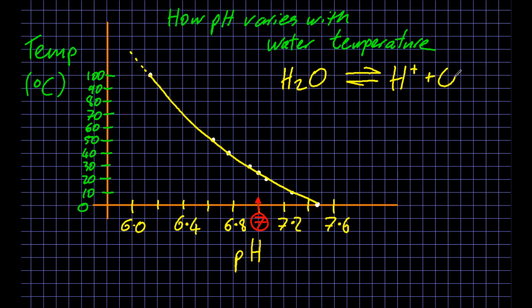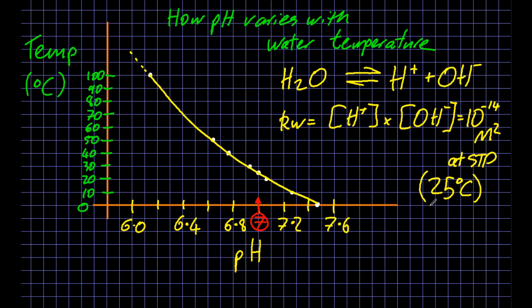So let's see if we can explain that. This is the dissociation equilibrium for water, breaking up into the hydrogen ion and hydroxide ion. Here's the equation for Kw, which is 10 to the minus 14 molar squared. You can ignore the molar squared. The IB doesn't care. But that's at 25 degrees C.